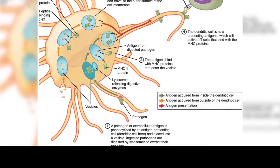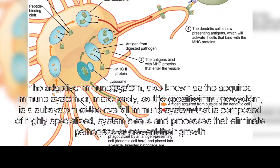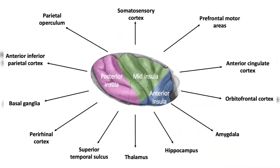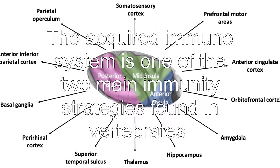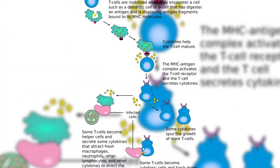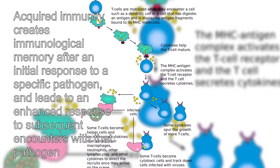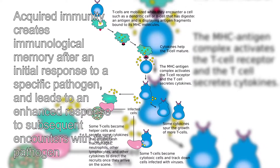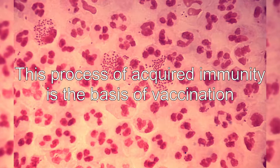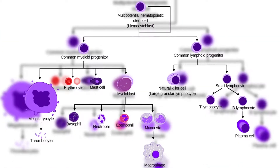The adaptive immune system, also known as the acquired immune system or, more rarely, as the specific immune system, is a subsystem of the overall immune system that is composed of highly specialized systemic cells and processes that eliminate pathogens or prevent their growth. Acquired immunity creates immunological memory after an initial response to a specific pathogen, and leads to an enhanced response to subsequent encounters with that pathogen. This process of acquired immunity is the basis of vaccination.